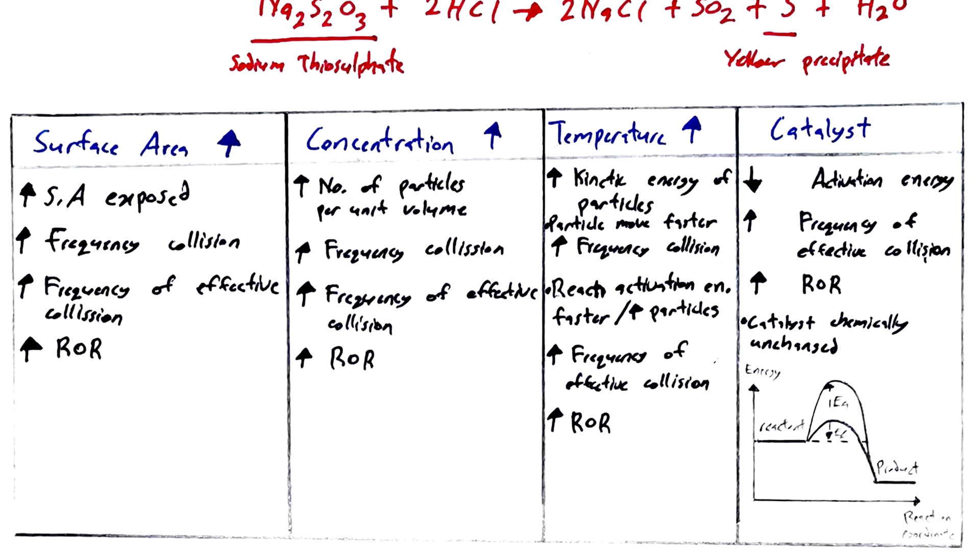When the temperature of reactant increase, the kinetic energy of particles will increase and the particles will move faster. More particles will reach activation energy faster. This will cause the frequency collision to increase and the frequency of effective collision to increase. Thus rate of reaction increase.